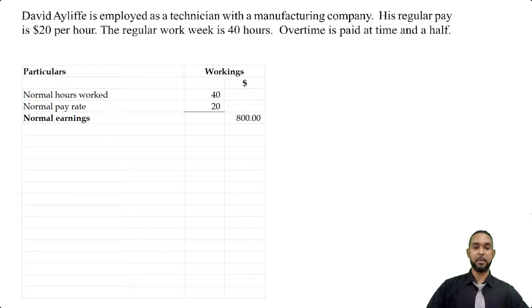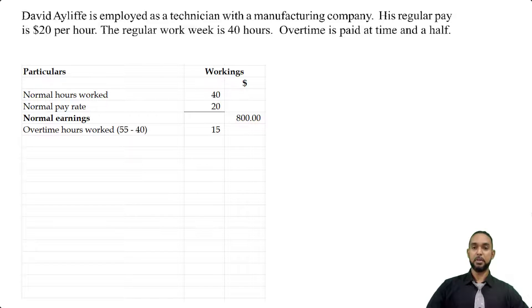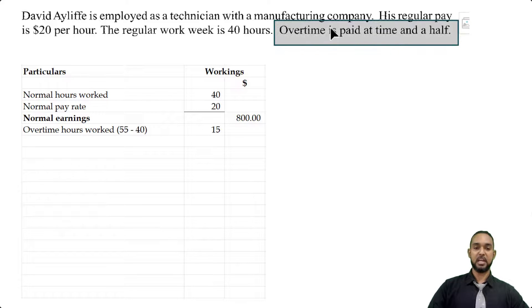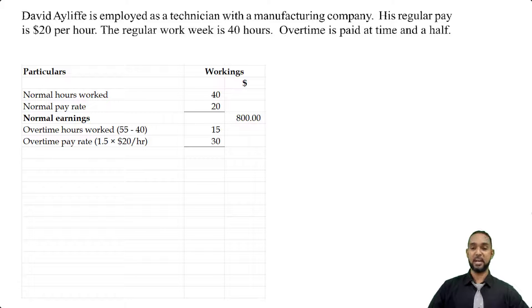Now for overtime — he worked 55 hours in the week, 40 of which were regular hours. The remainder, the extra hours worked above 40, is the overtime. So 55 minus 40 gives us 15 hours of overtime. Overtime is paid at time and a half, meaning one and a half times the regular pay rate of $20 per hour. So 20 multiplied by 1.5 gives us $30 per hour, which is the overtime pay rate.